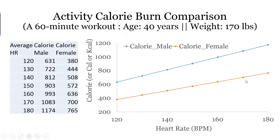You can also get an idea about different heart rates and what would be the total energy burn. This was calculated based on a person 40 years old at 170 pounds weight, and this is only for 60 minutes — so if someone runs or does whatever activity, if they work out for 60 minutes.